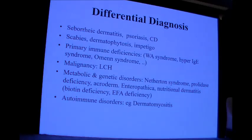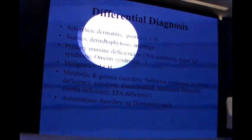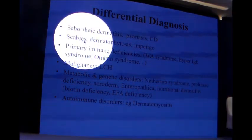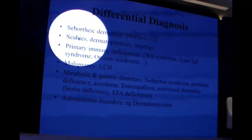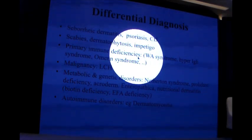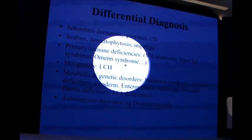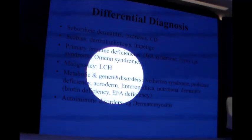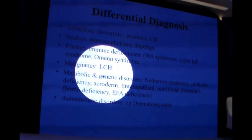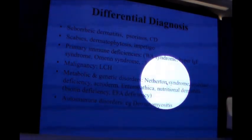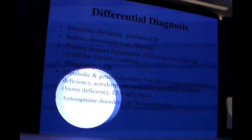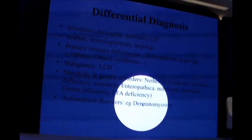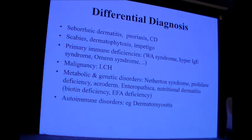The differential diagnosis is mainly of concern for dermatologists. It includes different inflammatory diseases like seborrheic dermatitis and psoriasis, infestations like scabies, dermatophytosis, and impetigo. Primary immune deficiencies — especially Omenn's syndrome and hyper-IgE syndrome — can present with similar lesions. Langerhans cell histiocytosis may also simulate atopic dermatitis. Some metabolic and genetic disorders, such as prolidase deficiency, acrodermatitis enteropathica, biotin deficiency, essential fatty acid deficiency, and rarely dermatomyositis, may also mimic atopic dermatitis.